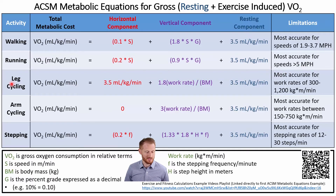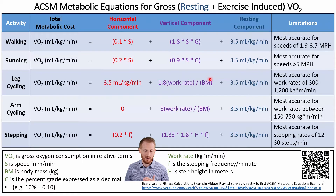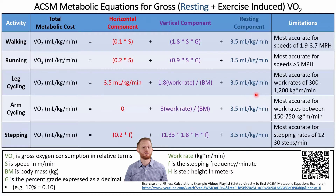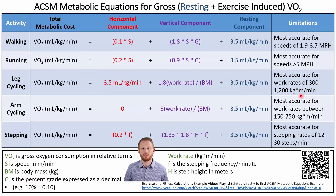For the leg cycling equation, VO2 equals 3.5 mL/kg/min plus 1.8 times the work rate divided by the body mass of the individual, plus 3.5 mL/kg/min for rest. This equation is most accurate between 300 and 1,200 kg·m/min for the work rate — below or above that range it becomes less accurate.